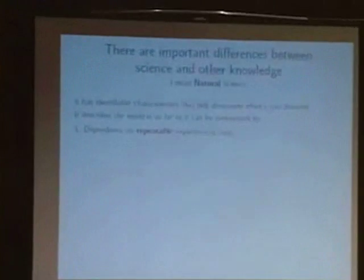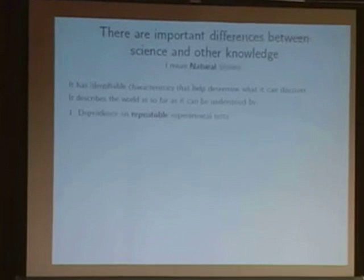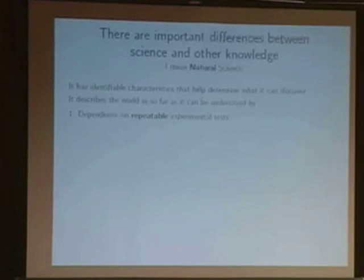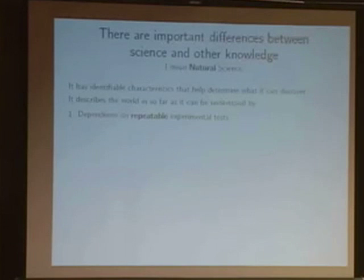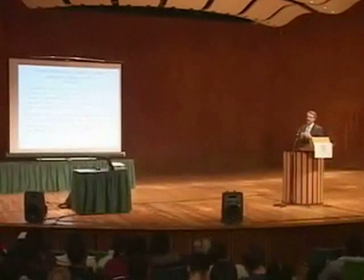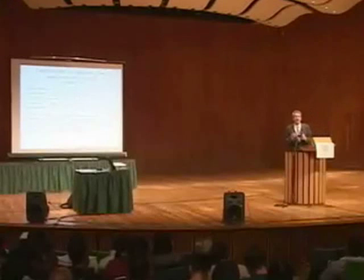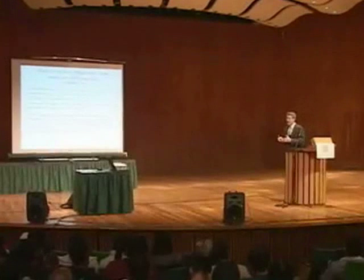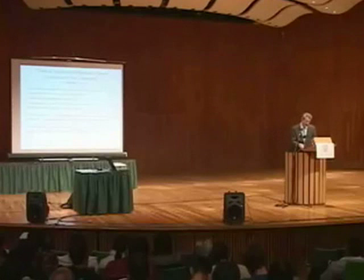The second characteristic of science, which is perhaps less widely recognized, is that it restricts its attention to matters on which it's possible for rational observers to agree on the results of the experiment, maybe not the interpretation. I'm going to call that a requirement of clarity. Some would say this is a requirement of mathematical description, but I think that interprets the word mathematical too broadly to be helpful in this way. I'm using the word clarity in a kind of technical sense to mean this intersubjective communication.